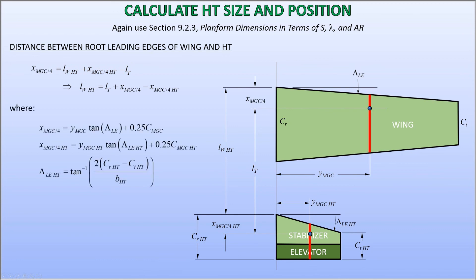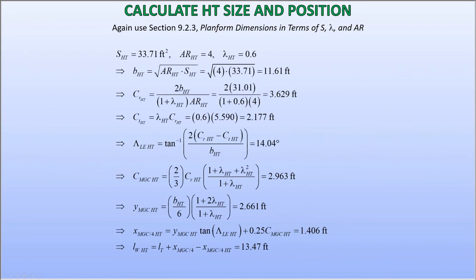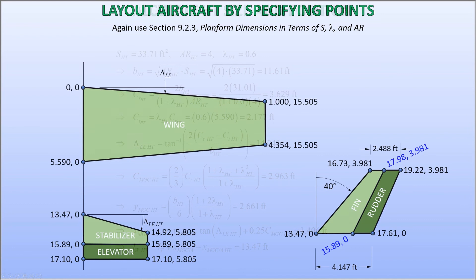Next, we solve for all the necessary geometric parameters as shown here. I encourage the enthusiastic viewer to also calculate these values. Anyway, these values allow me to lay out the wing horizontal tail vertical tail system as shown here, where all corner points have been labeled with the appropriate coordinates. This will make it much easier to change the original model. And this is what I will do in the next video.